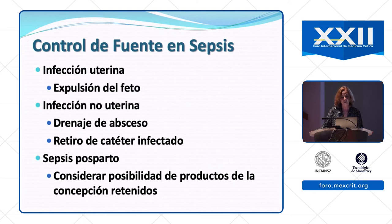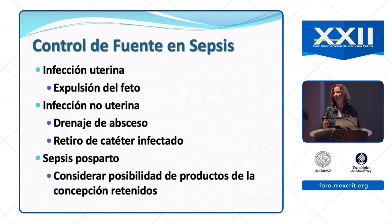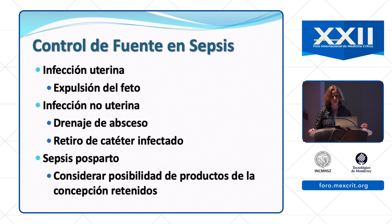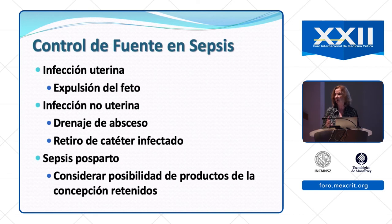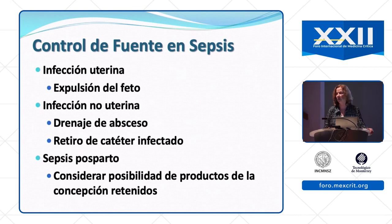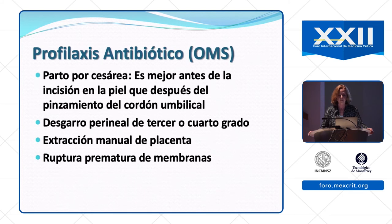For source control: if there is a uterine infection, delivery is required — allow labor to continue, and if it is not progressing, the fetus needs to be removed. For non-uterine infections, drain abscesses and remove infected catheters as you would in any patient. In postpartum sepsis, always consider retained products of conception, which is very common and must be addressed.